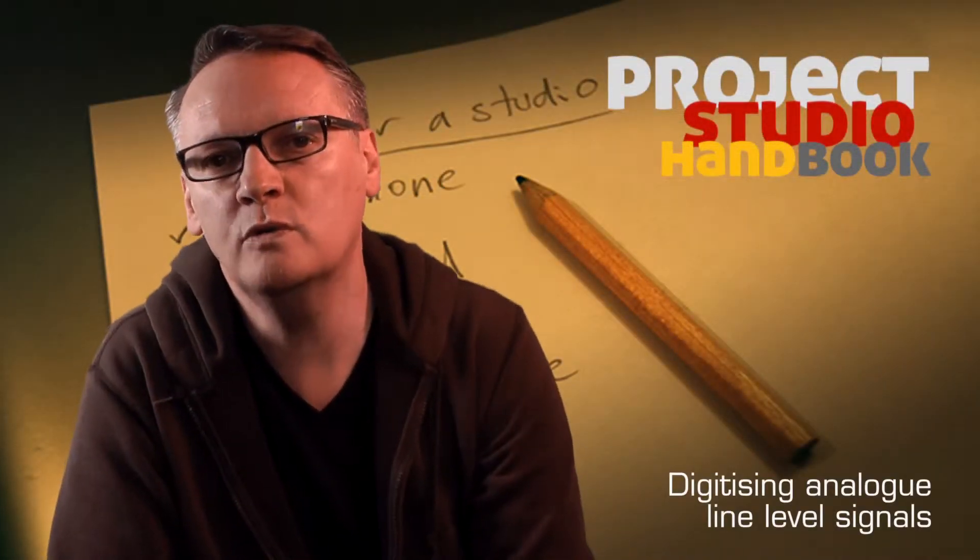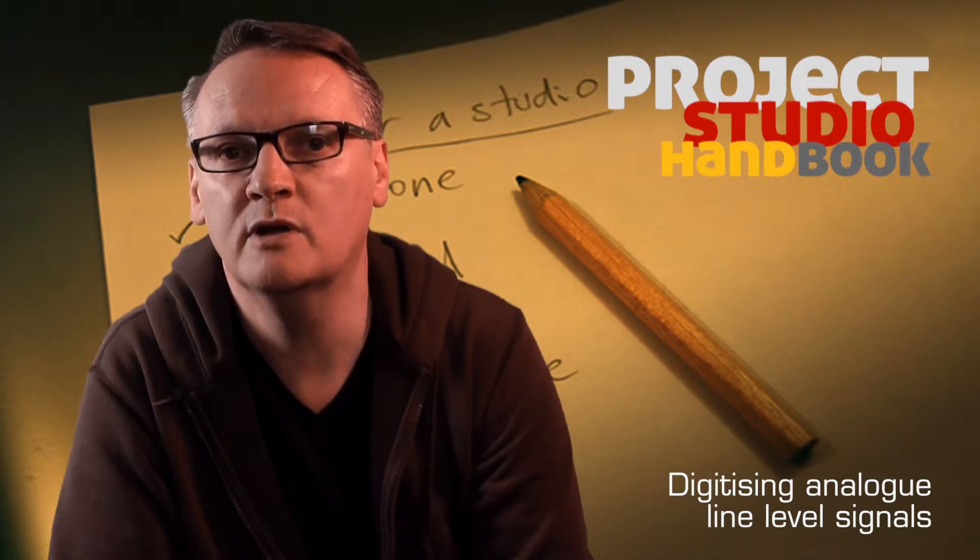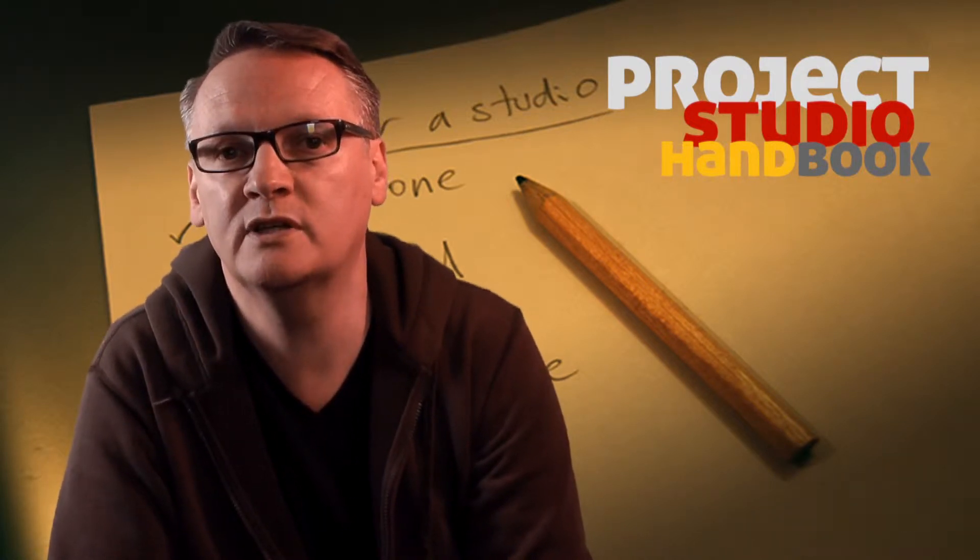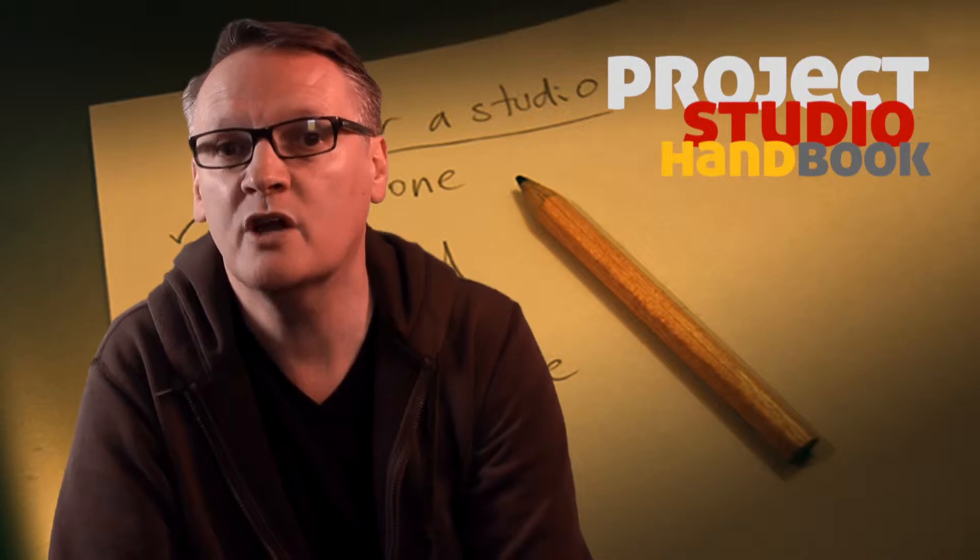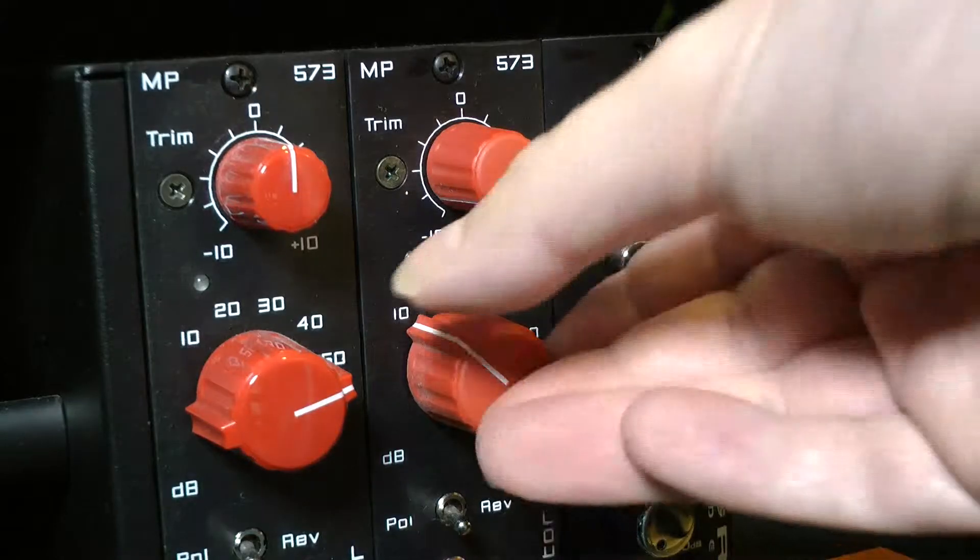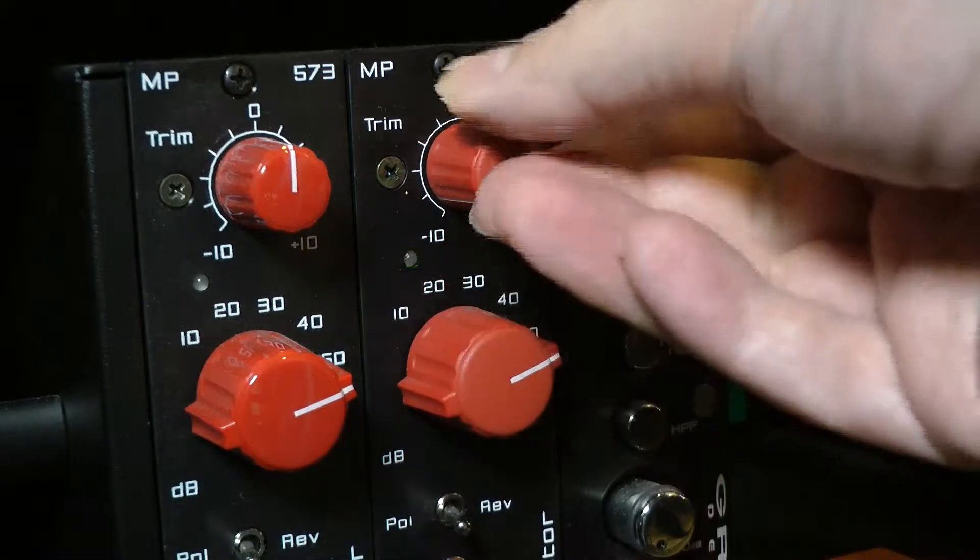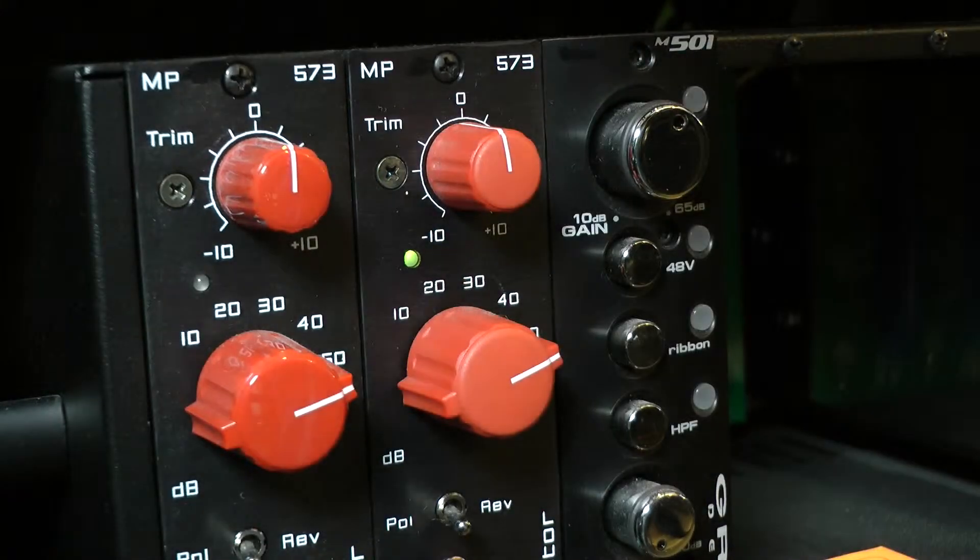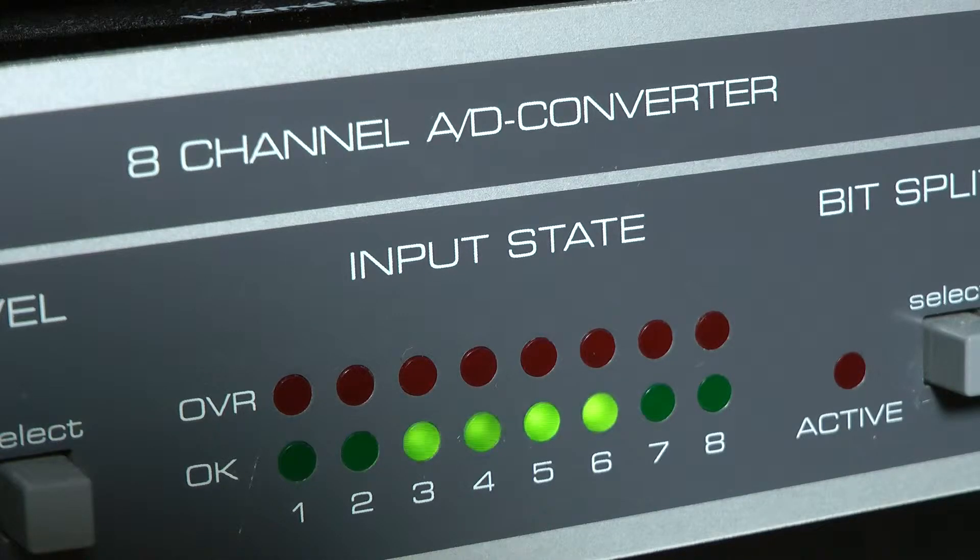In almost all situations a signal must be at line level before it is sent to be converted into a digital signal. So a signal coming from a microphone needs to pass through a microphone preamplifier and be amplified up to line level before it can be digitized.